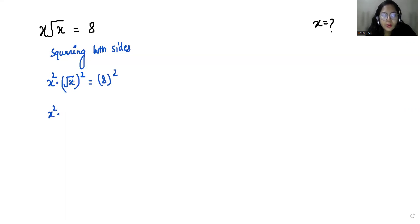So x squared times x, with the help of squaring, the square root eliminates. We can write 8 as 2 to the power 3, whole squared.